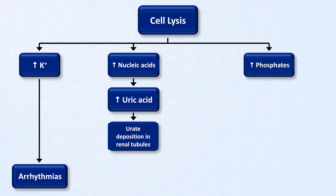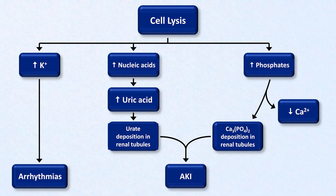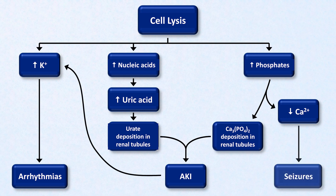Phosphates are also released; these complex with extracellular calcium resulting in hypocalcemia and calcium phosphate deposition in the renal tubules. The uric acid and calcium phosphate act together to cause acute kidney injury, which can further contribute directly to the hyperkalemia. And the hypocalcemia places the patient at risk of seizures.